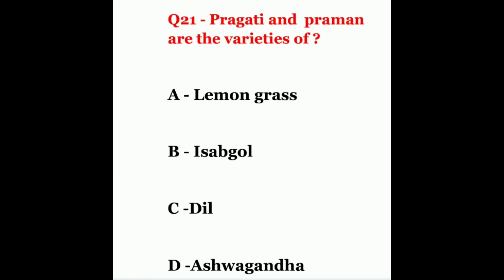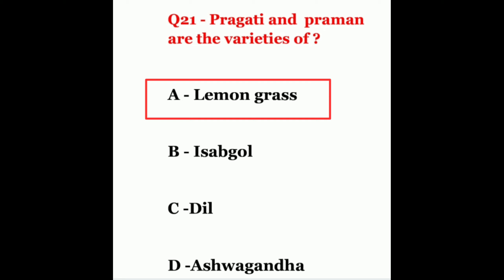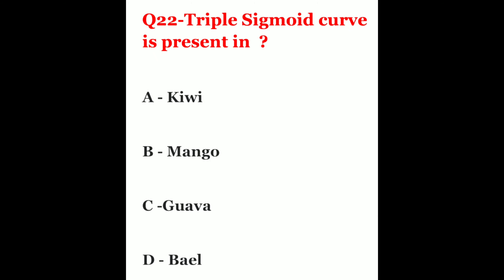Question 21. Pragati and Praman are the varieties of? The options are lemongrass, isabgol, dill, or ashwagandha. The correct answer is lemongrass.